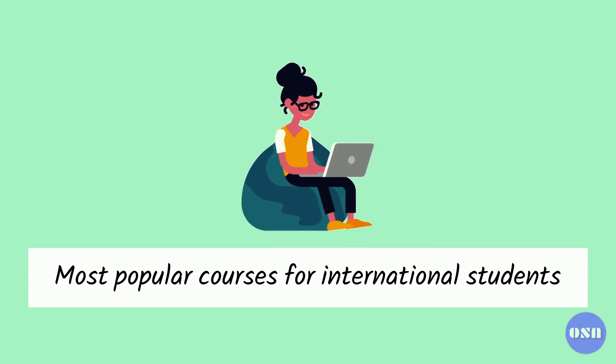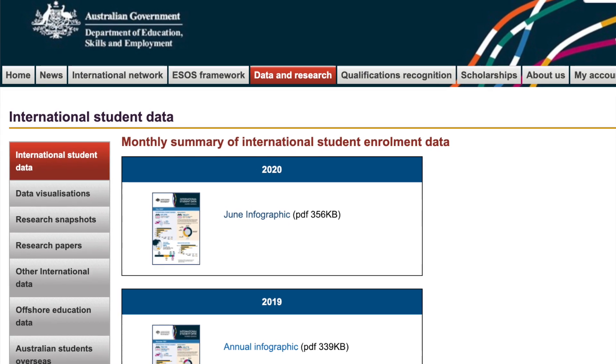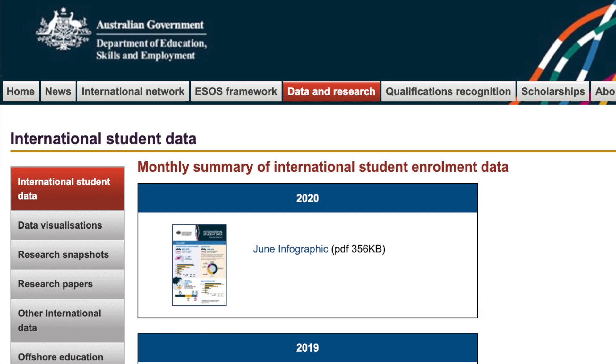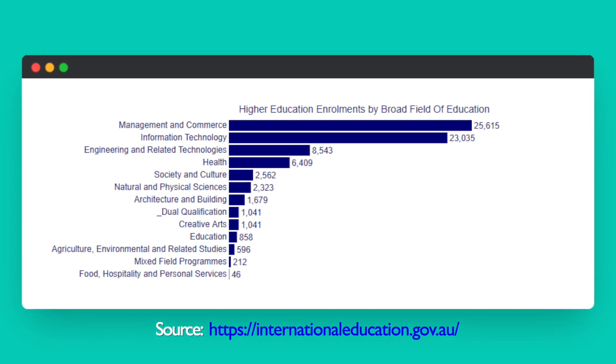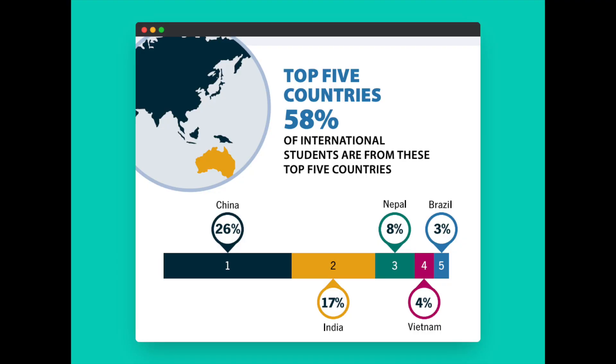In this video we're going to discuss what are some of the most popular courses that international students take in Australia and what sort of course you can take when you are planning to study there. Based on our research on the Australian government's international education website, we found that six fields are specifically popular among international students from the top five source countries: China, India, Nepal, Vietnam, and Brazil.